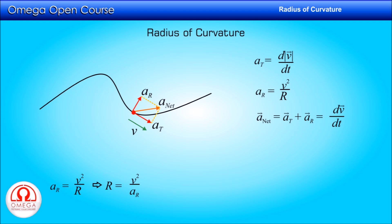If we know the velocity vector and acceleration vector of the particle at a given point, then also its radius of curvature can be calculated. Since the net acceleration of the particle is the resultant of its radial and tangential accelerations, the component of net acceleration along the velocity vector is tangential acceleration, and the component perpendicular to the velocity vector is radial acceleration. Therefore, if theta is the angle between the velocity vector and acceleration vector, radial acceleration is net acceleration times sin theta. Thus, radius of curvature in this case is v² divided by net acceleration times sin theta.